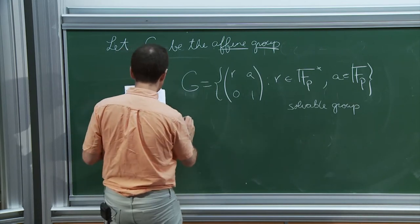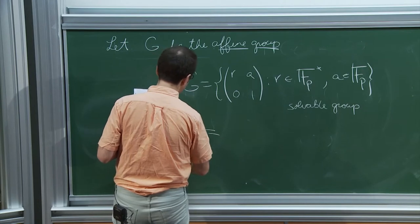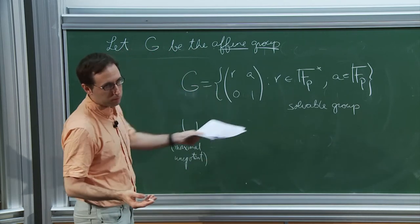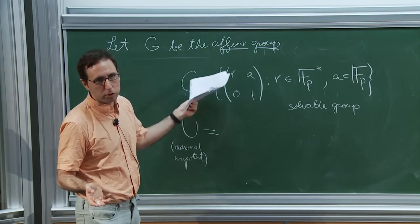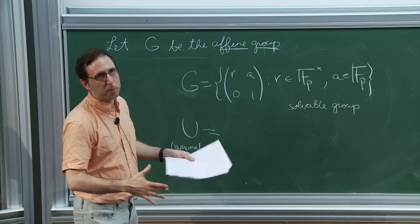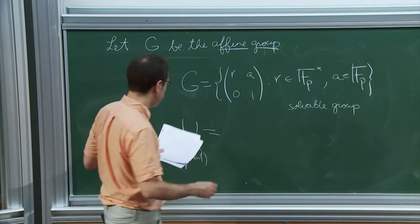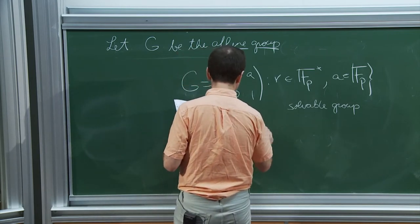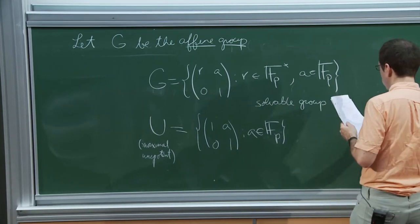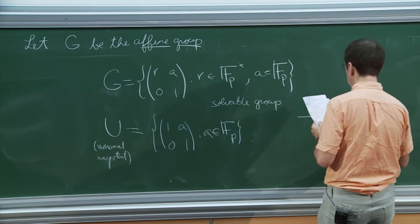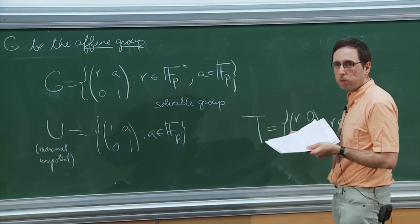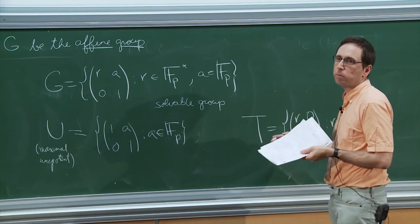Let me talk about its subgroups. There's U, the maximal unipotent subgroup — the upper triangular matrices with one on the diagonal. And T for torus — the maximal torus. Any maximal torus is conjugate to this one; any maximal torus can be written this way if you change the basis.